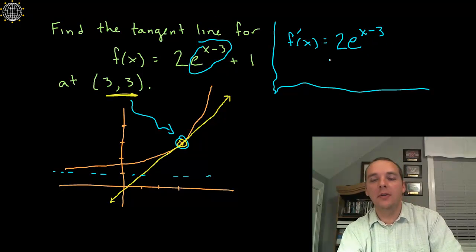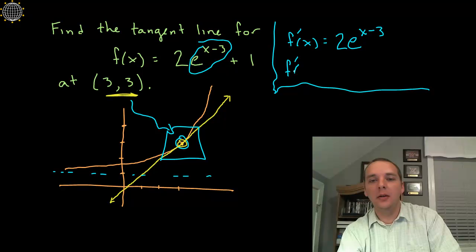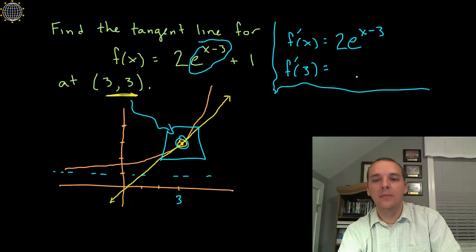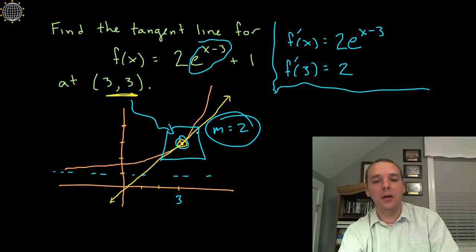Now I want the slope right here, so I'm going to plug in 3 into the derivative because that's the x coordinate that I'm looking for. So 3 minus 3 is 0, e to the 0 is 1, 1 times 2 is 2. So this guy's slope, this m is going to be 2 right here, and it even kind of looks like that on my graph.